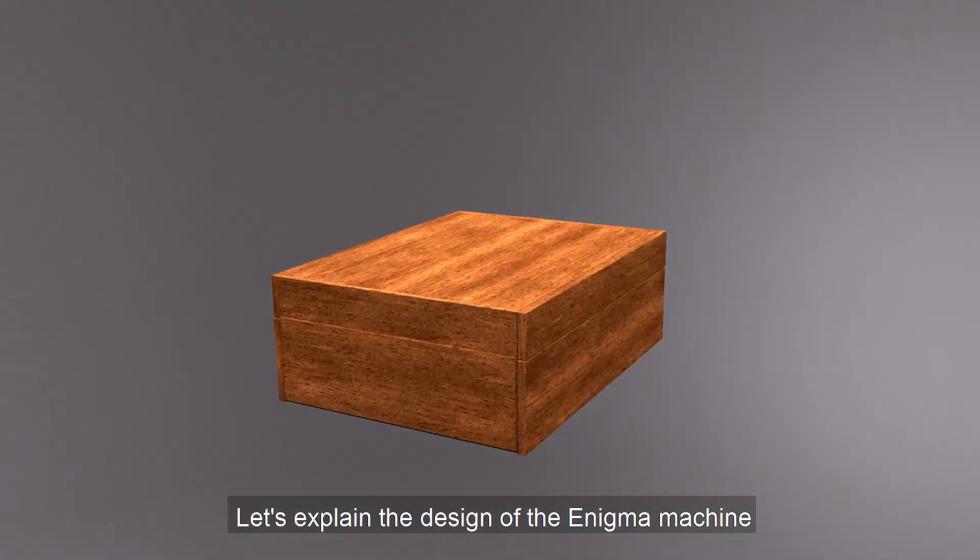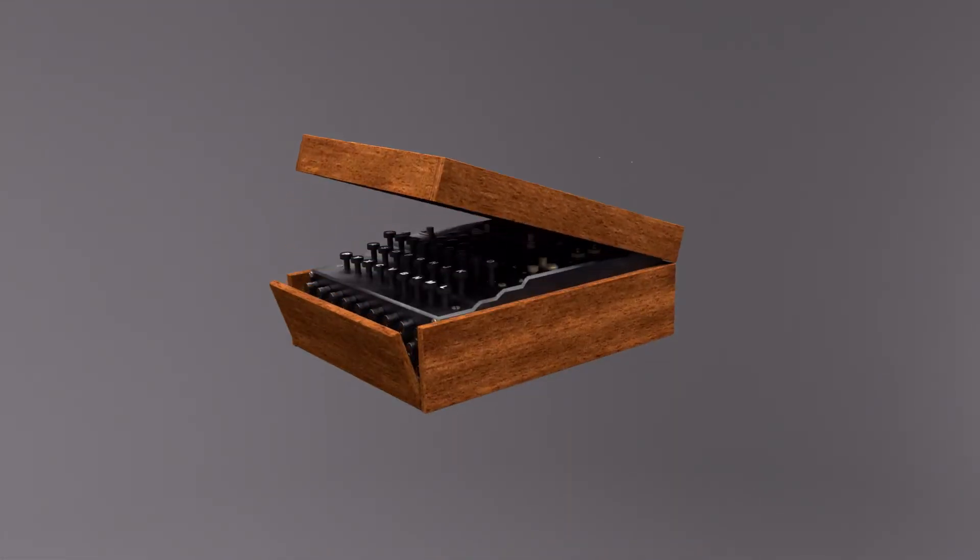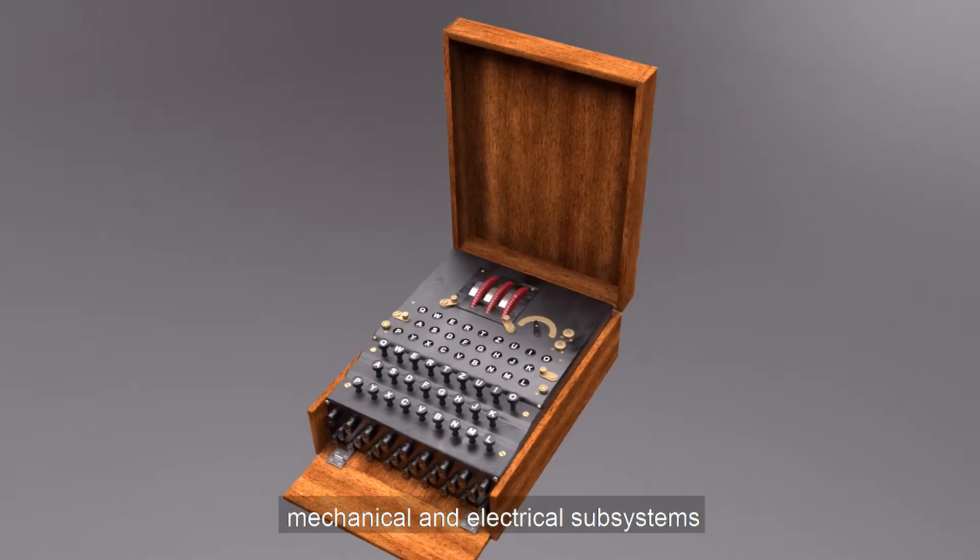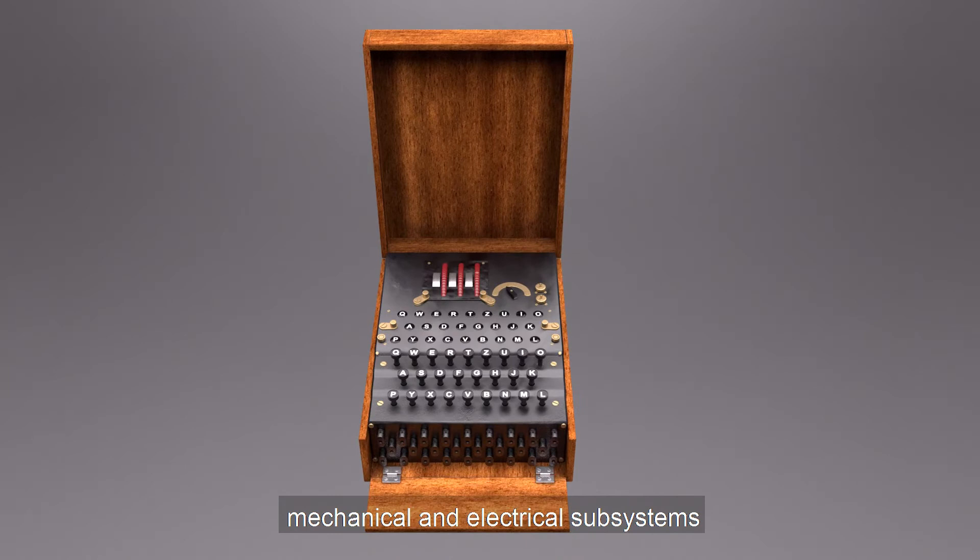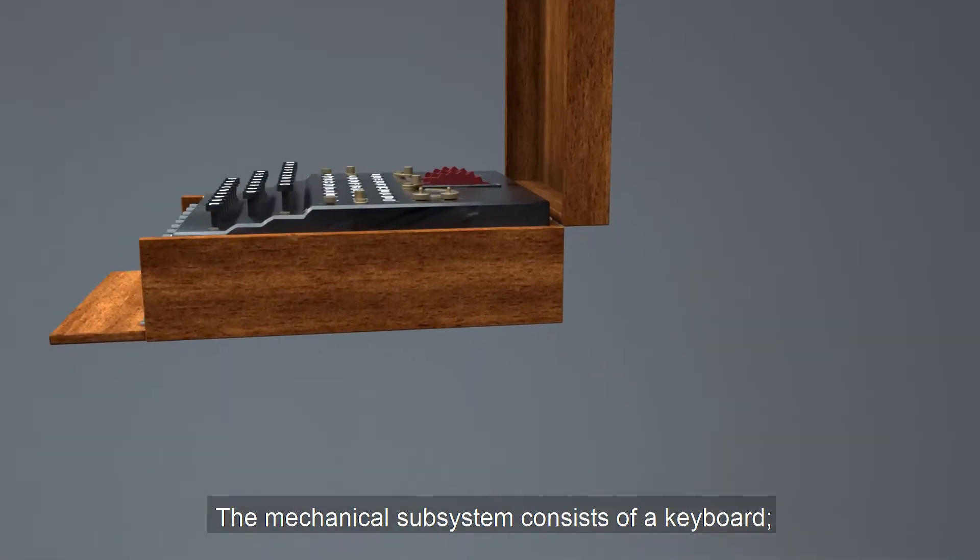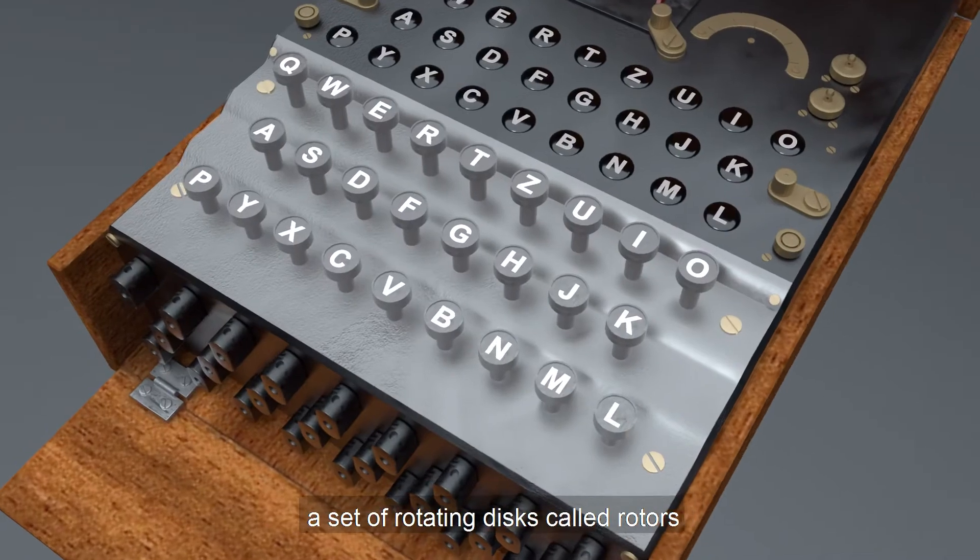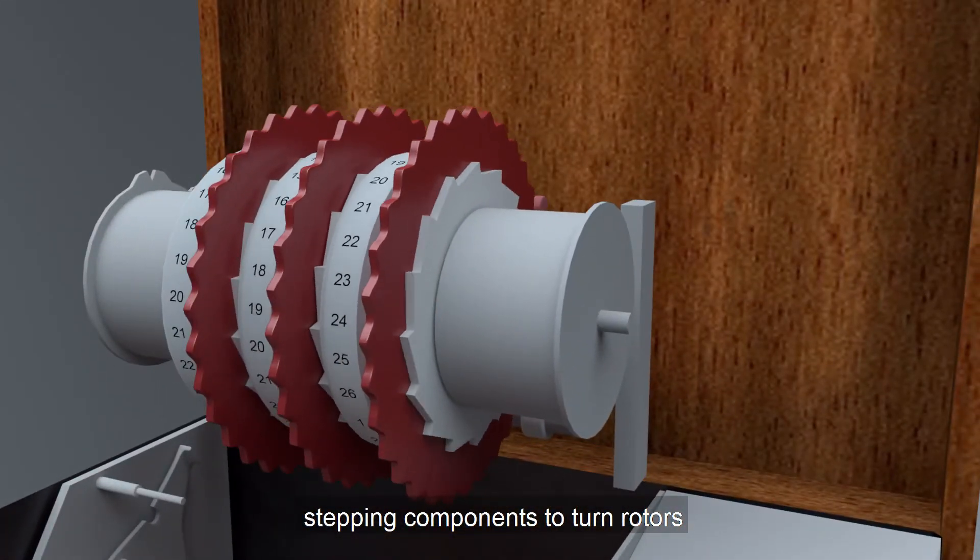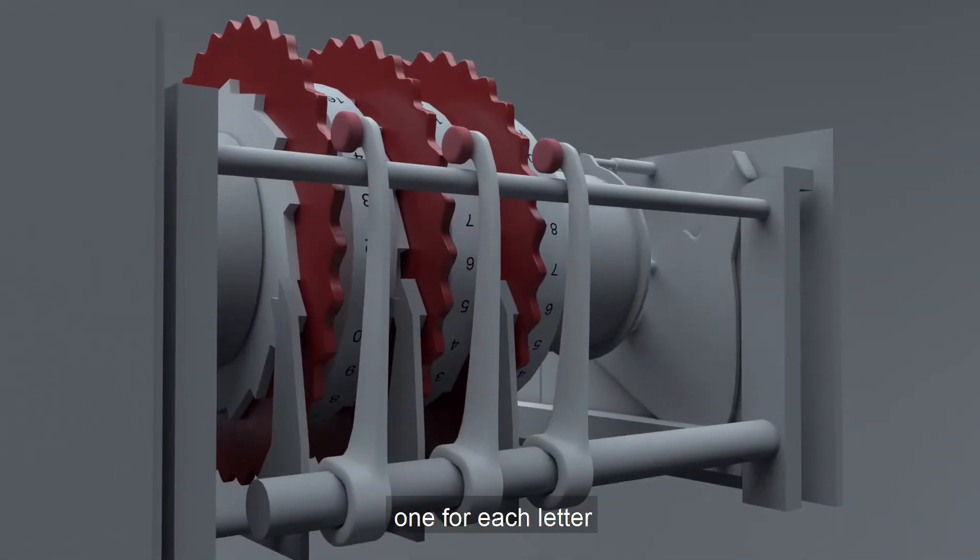Let's explain the design of the Enigma machine. Like other rotor machines, the Enigma machine is a combination of mechanical and electrical subsystems. The mechanical subsystem consists of a keyboard, a set of rotating disks called rotors, stepping components to turn rotors, and a series of lamps, one for each letter.